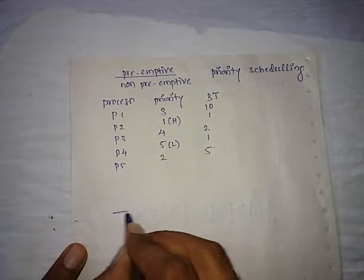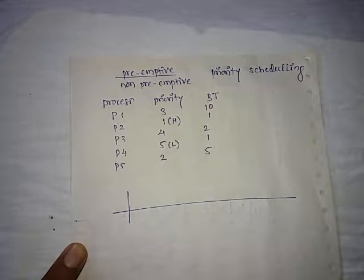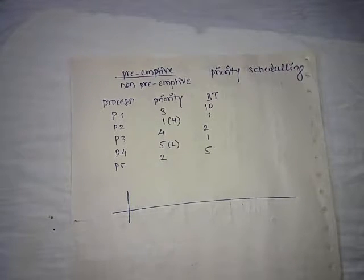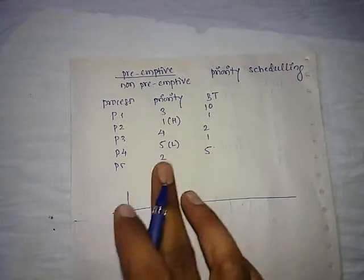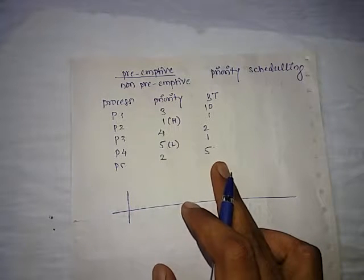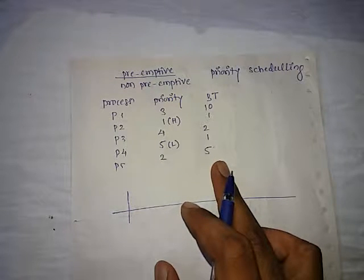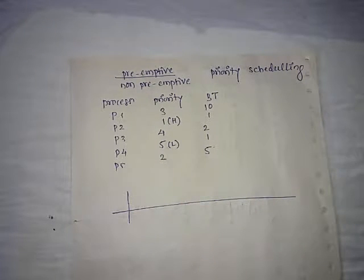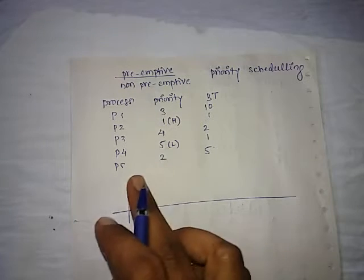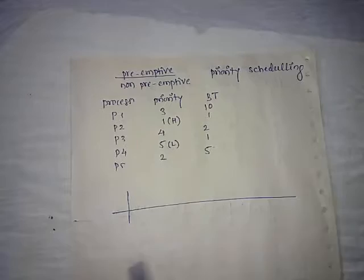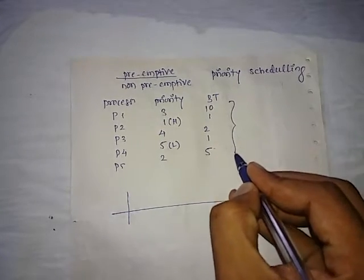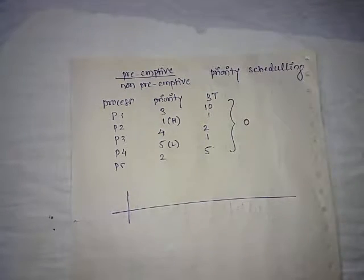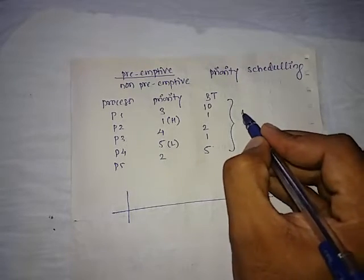We'll draw a Gantt chart here. If you're regularly following my lectures, we've already seen problems like this where the burst time is given. There is no arrival time given in the question, so we consider the arrival time for all the processes is zero.